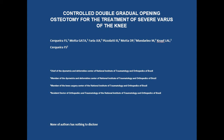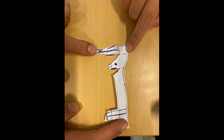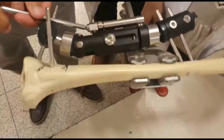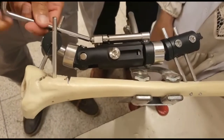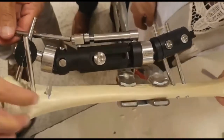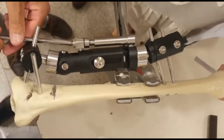Controlled double gradual opening osteotomy for the treatment of severe varus of the knee — the authors have nothing to disclose. Preoperative surgery planning is carried out. In this artificial bone model, we observe the gradual opening of the double osteotomy being performed. In this way, we can predict the outcome of the planned surgery.